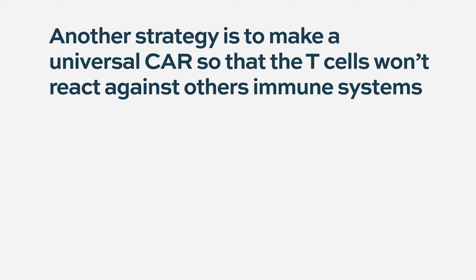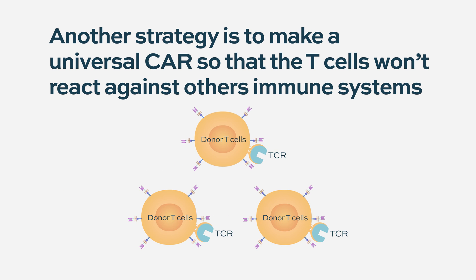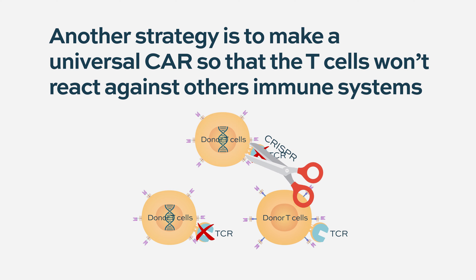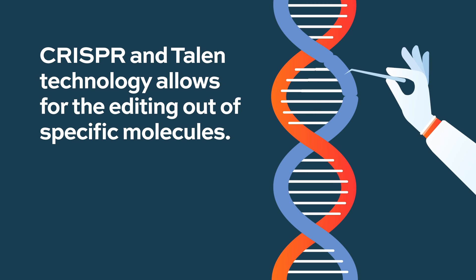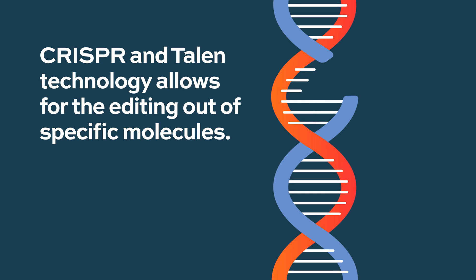There are a couple of other strategies. One is to develop a universal CAR, where you take that T cell and engineer it so it won't react against the human being. One problem with an allogeneic CAR T cell is that it could potentially target the patient's tissue and cause graft-versus-host disease. One way to get around this is to disable the T cell receptor using gene modification technologies like CRISPR and TALEN, where you can specifically edit out a particular molecule in a cell.